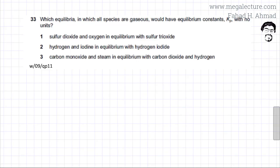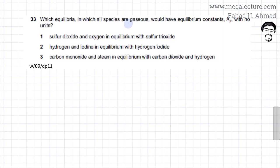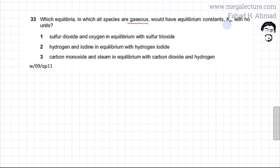The following past paper question asks: which equilibria, in which all species are gaseous, would have equilibrium constant Kp with no units? There are three options given, and we need to determine which one gives a unitless Kp.